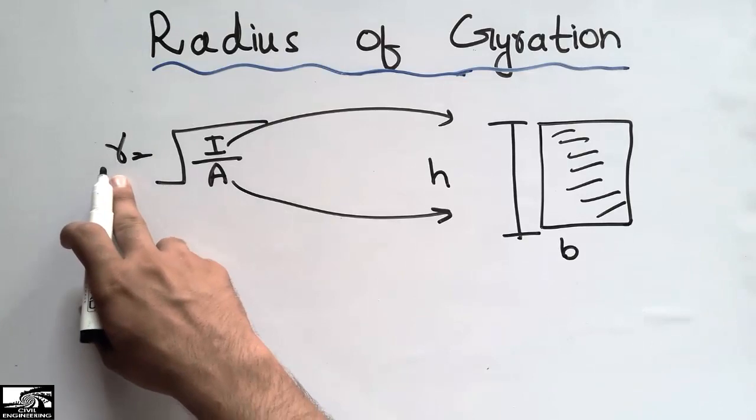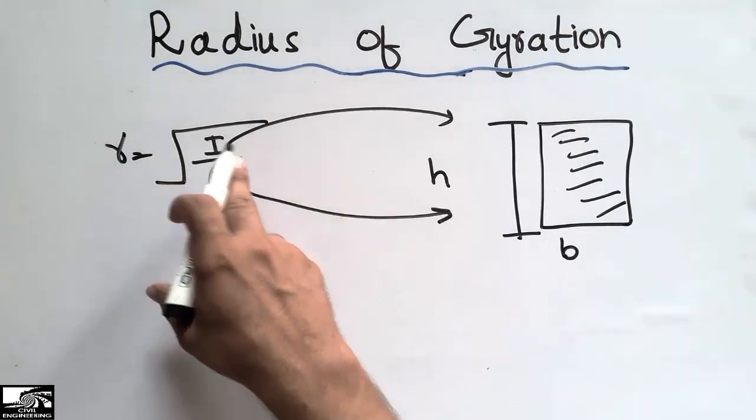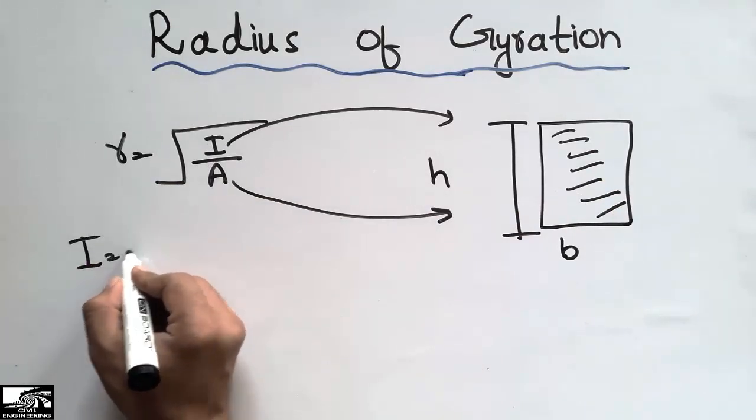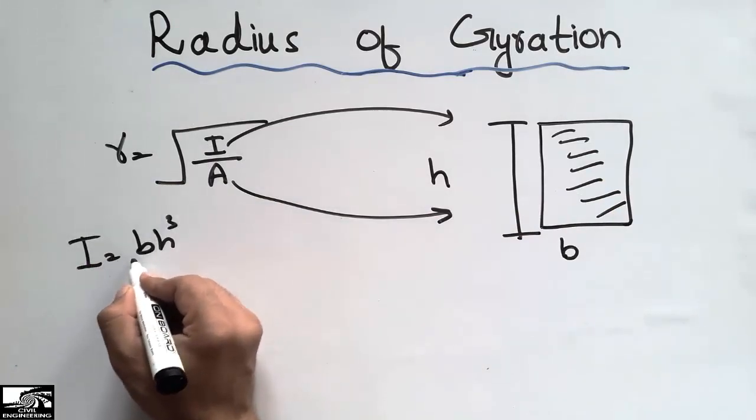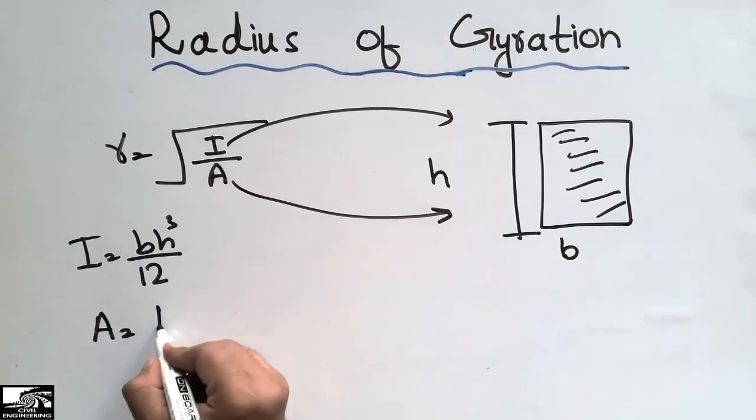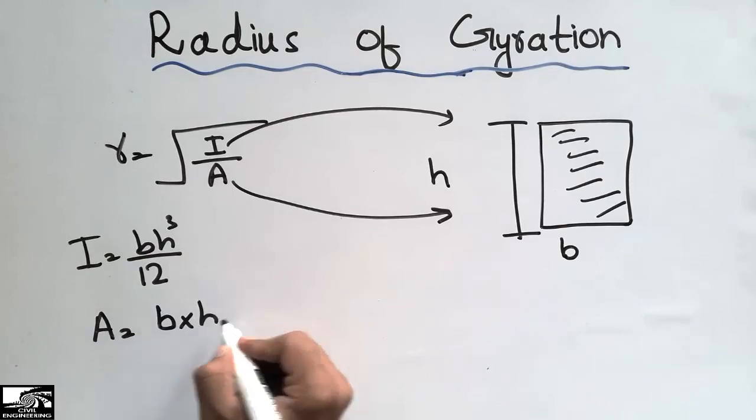The moment of inertia of this object can be found by BH³ divided by 12, and the area can be found by B times H. Because it's a rectangular object, we can find it by multiplying the two dimensions.